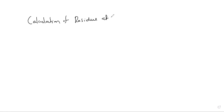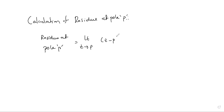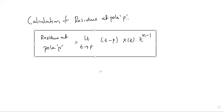Put the heading: Calculation of Residues. The residue at a pole p equals the limit as Z tends to p of the quantity Z minus p, multiplied by X of Z, multiplied by Z to the power n minus 1. This is the formula to find the residue at a particular pole value p. Using this we calculate the residue and then sum the residues — no need to evaluate the contour integral directly.